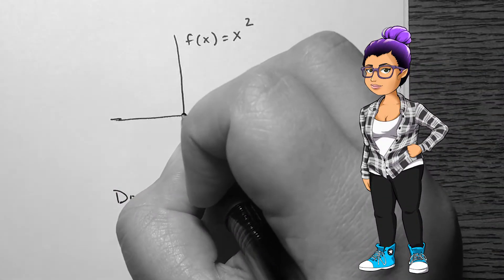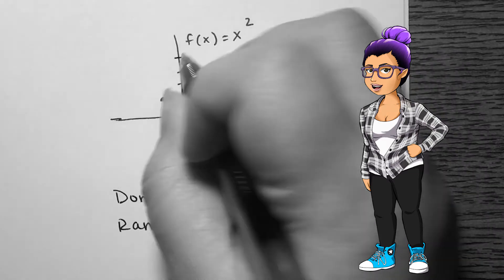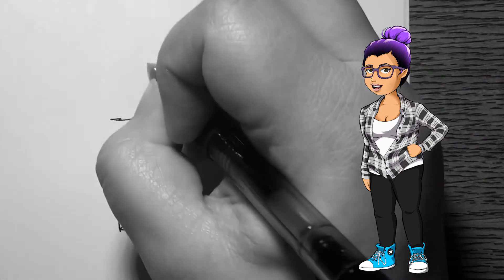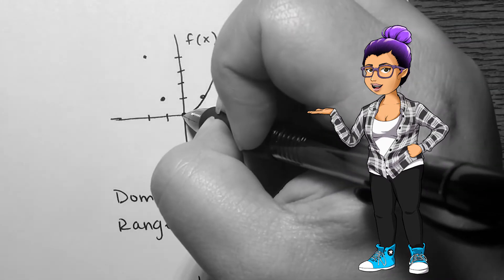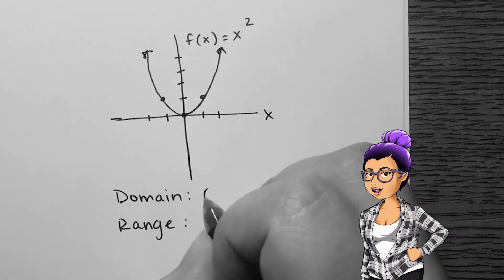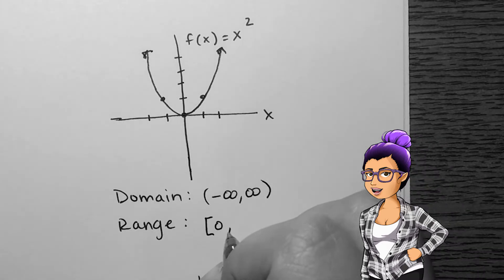The squared function can be written as f of x equals x squared. Whatever x value goes in gets multiplied by itself. The result looks like the letter u, called a parabola. The domain and range is like the absolute value function. The domain is all real numbers and the range is everything greater than or equal to zero.